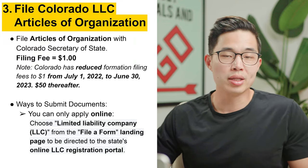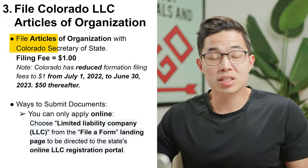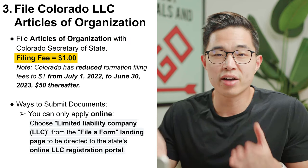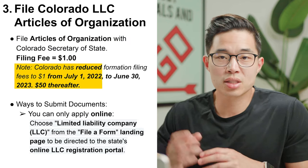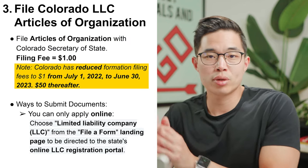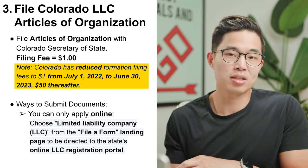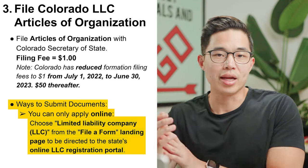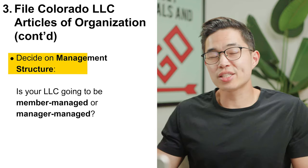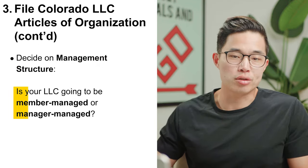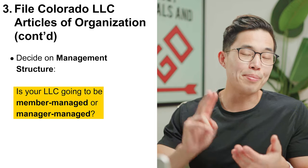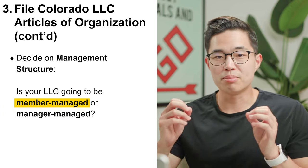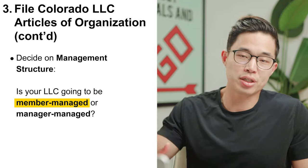Step number three is to file your Colorado LLC articles of organization with the Colorado Secretary of State. Currently the filing fee is one dollar, active until June 30th 2023, after which it goes up to fifty dollars. The only way to submit this document is online — we'll leave that link in the description. You'll also want to decide on your management structure: either member managed or manager managed. For most people watching this it's going to be member managed since you are the one managing the LLC.